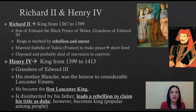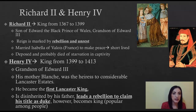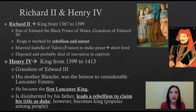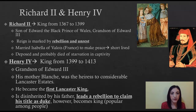Then we get to some less notable kings. Richard II was king from 1367 to 1399. He was the son of Edward the Black Prince of Wales and grandson of Edward III — he actually survived his father, so he became king instead. His reign was marked by a lot of rebellion and unrest. He married another princess of France, Isabella of Valois, in order to make peace — that was extremely short-lived.